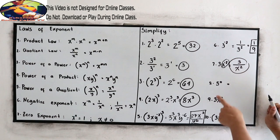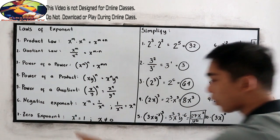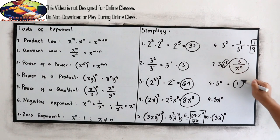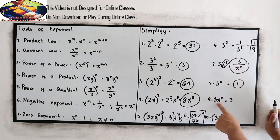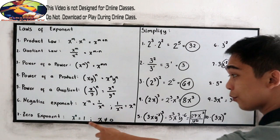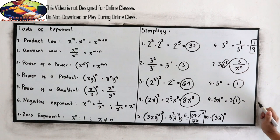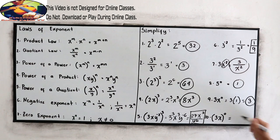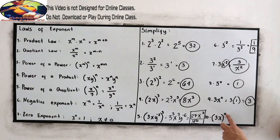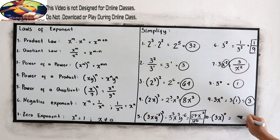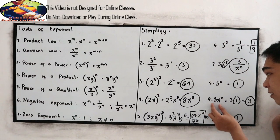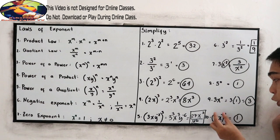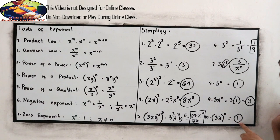Number 8: 5 raised to 0. We have the zero exponent, so this equals positive 1. Number 9: 3 times x raised to 0. Since x raised to 0 equals 1, that is 3 times 1, which equals 3. Number 10: quantity 3x raised to 0. The entire quantity is raised to 0, so the final answer is 1. Notice the difference — in number 9, only x is raised to 0, but in number 10, the whole quantity 3x is raised to 0.